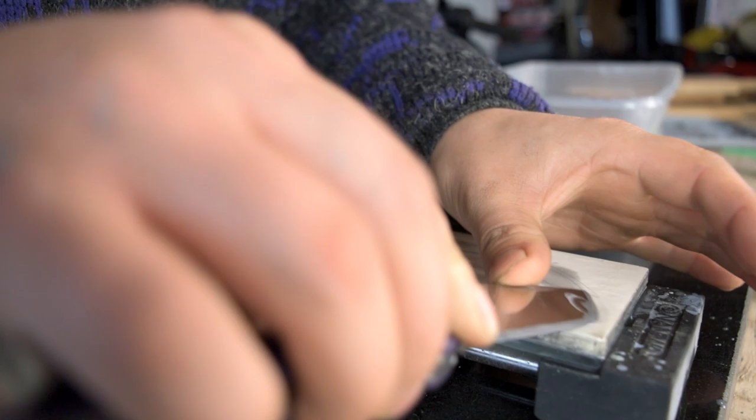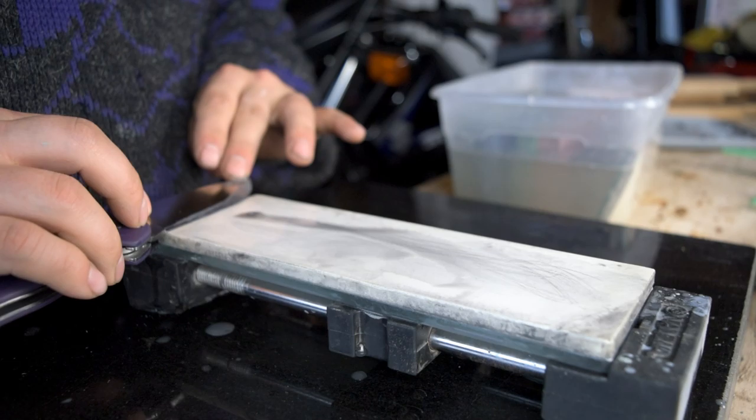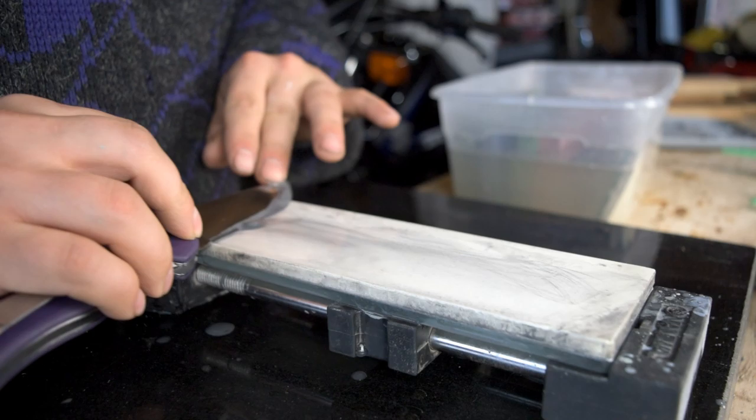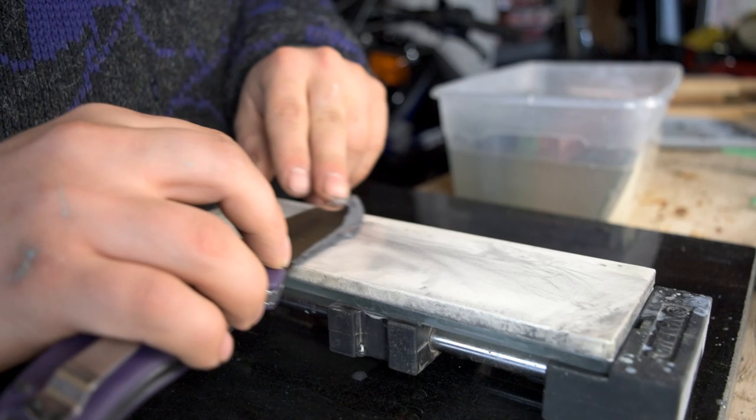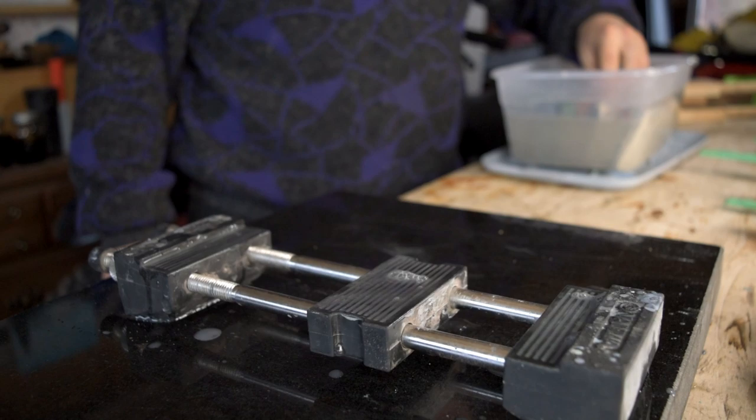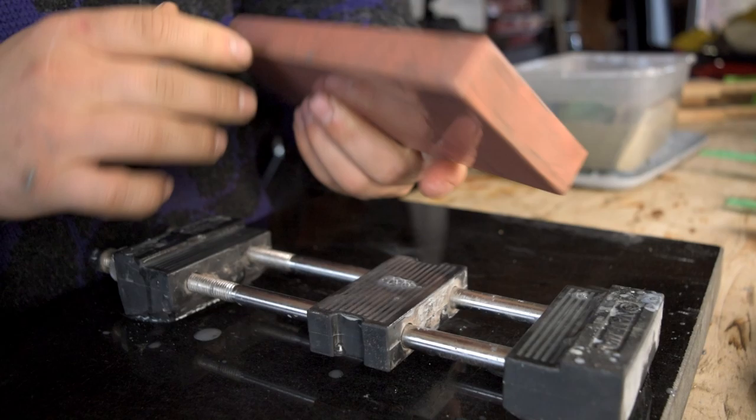So with a slight burr detected, I'm going to switch over to the single cutting strokes again and just clean up that edge, reducing pressure, maintaining that same angle. I'm going to switch out this 1000 with the last stone of the day, and that will be the Naniwa 3000 grit Super Stone.